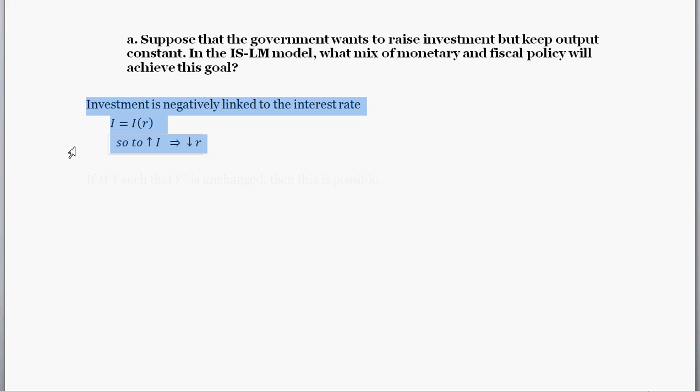So first off, let's think about raising investment. In our model so far, investment's been a function of the interest rate. Investment is negatively linked to the interest rate. That is to say, when the interest rate is super high, the cost of borrowing is high, and so we expect investment to be very low. When interest rate is low, the cost of borrowing is very low, and so we'd expect firms to borrow quite a bit, and so investment going up. So if we wanted to increase investment, what we need to do is somehow decrease the interest rate.